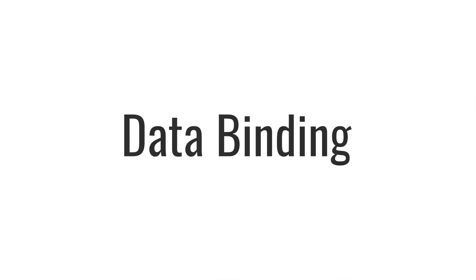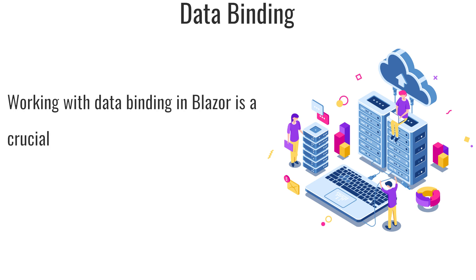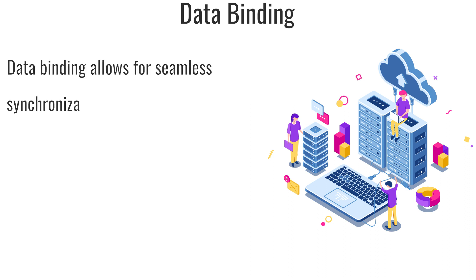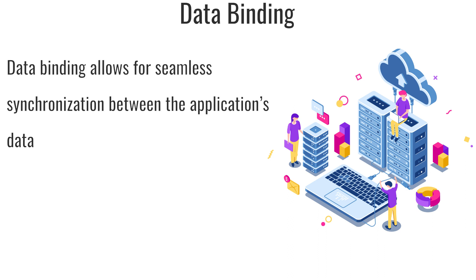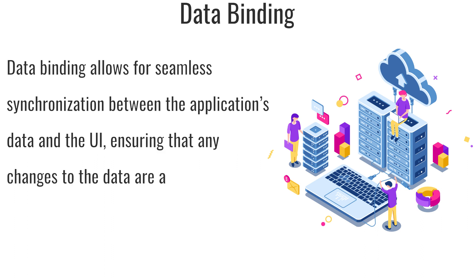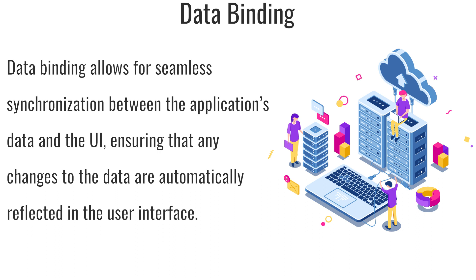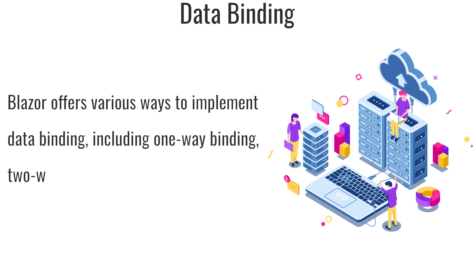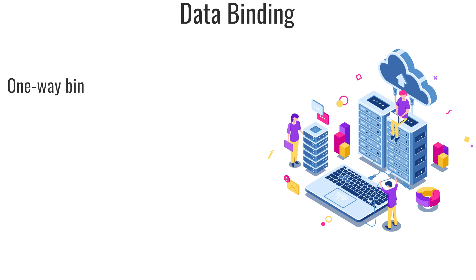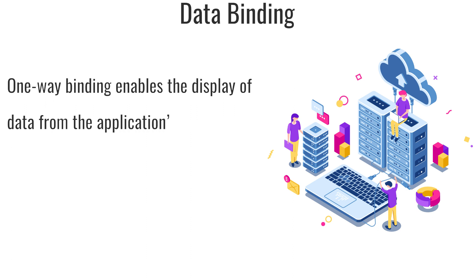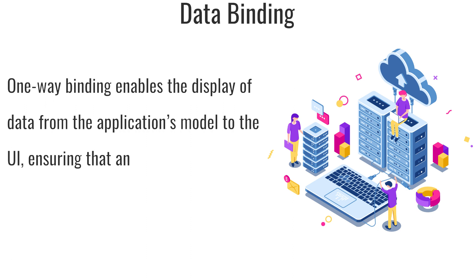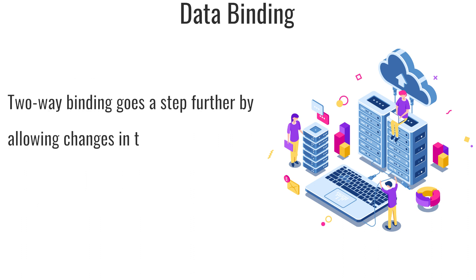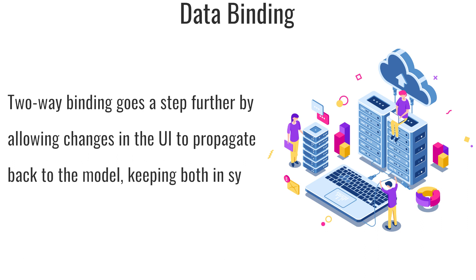Working with data binding: Data binding in Blazor is a crucial aspect of building dynamic and responsive web applications. Data binding allows for seamless synchronization between the application's data and the UI, ensuring that any changes to the data are automatically reflected in the user interface. Blazor offers various ways to implement data binding, including one-way binding, two-way binding, and event binding. One-way binding enables the display of data from the application's model to the UI, ensuring updates to the model are reflected in the UI. Two-way binding goes a step further by allowing changes in the UI to propagate back to the model, keeping both in sync.